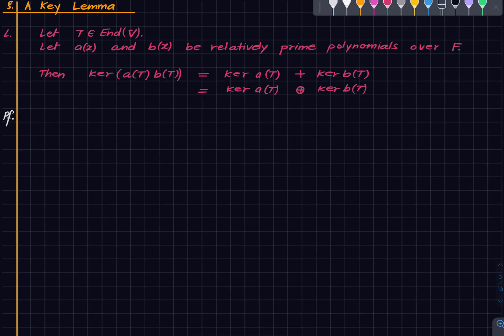Fix an endomorphism T on a vector space V, and let a(x) and b(x) be two relatively prime polynomials over F. Then the kernel of the product a(T)b(T) is actually the sum of the kernels of a(T) and b(T), and in fact this sum is a direct sum. Interesting statement. So let's get started.